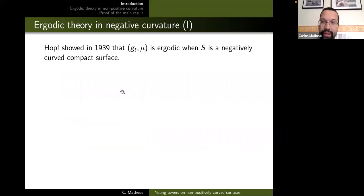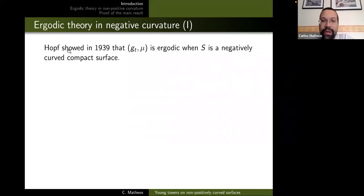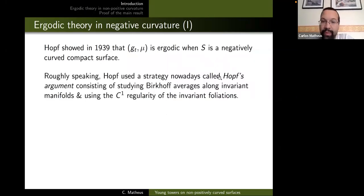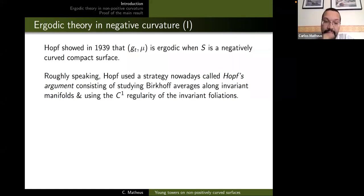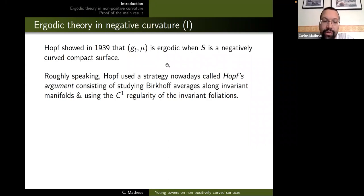The history of analyzing ergodic properties of geodesic flows has a long history. We should pay tribute to the work of Hopf in 1939, who introduced what people today call the Hopf argument to prove that geodesic flows on compact surfaces of negative curvature are ergodic. The idea is that time averages are constant along stable manifolds and backwards averages along unstable manifolds. Combined with a Fubini argument — possible because the invariant foliations are C¹ in this setting — this proved ergodicity.